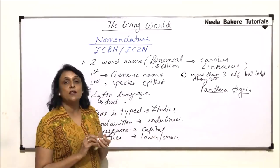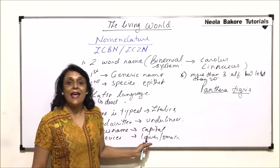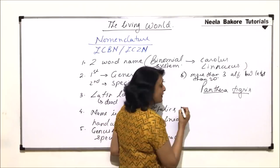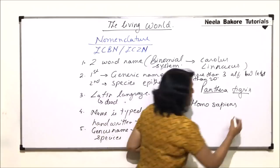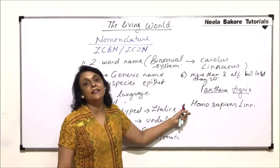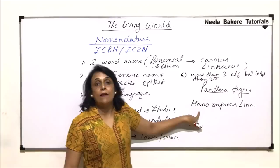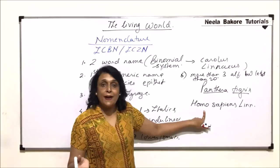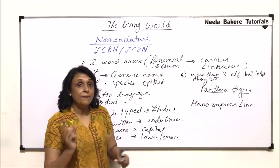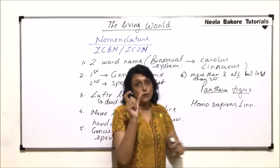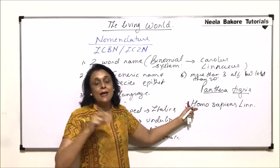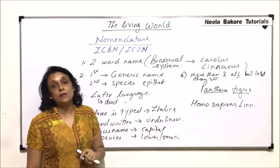The binomial system given by Linnaeus also has one additional feature: we can add the name of the scientist. For example, if we write Homo sapiens, this name was given by Linnaeus, so we write the short form of the scientist's name after it. This indicates that this was the scientist who gave the name to the species for the first time. If the name is later modified by another scientist X, it would be written as Homo sapiens Linnaeus X — the first name tells us who originally named it, and the second tells us who modified it.